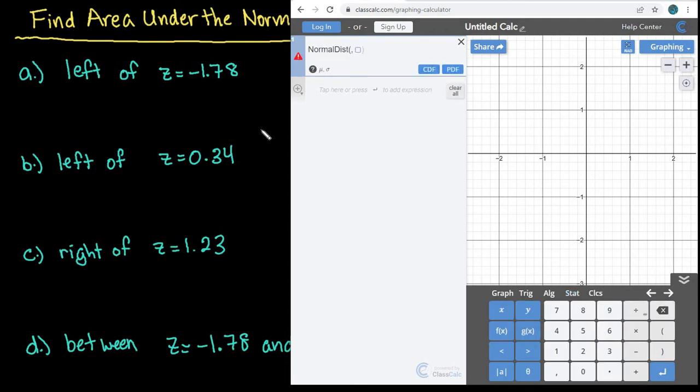So it's going to pull up the normal distribution up here and it's going to ask you for your mean and your standard deviation. Since we're dealing with z-scores, the mean is always going to be 0 and the standard deviation is going to be 1.